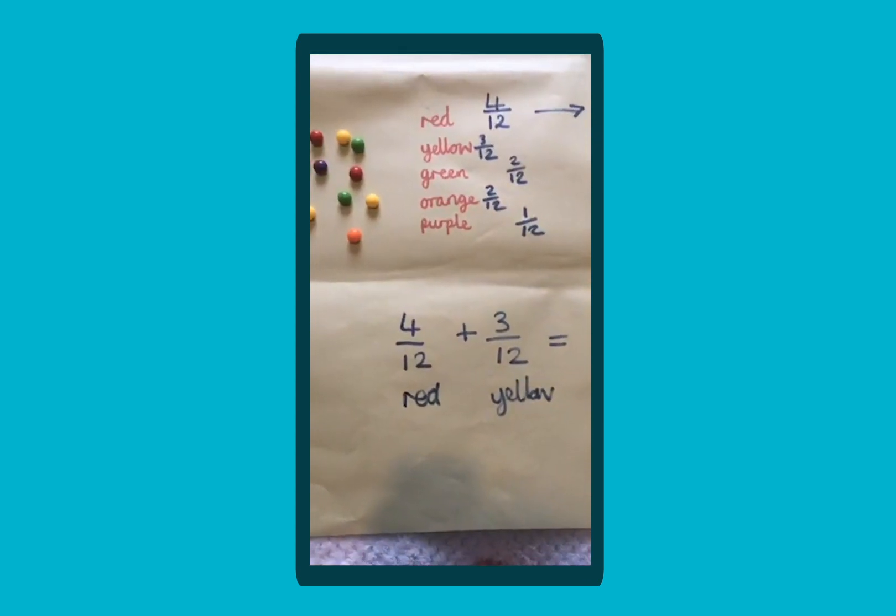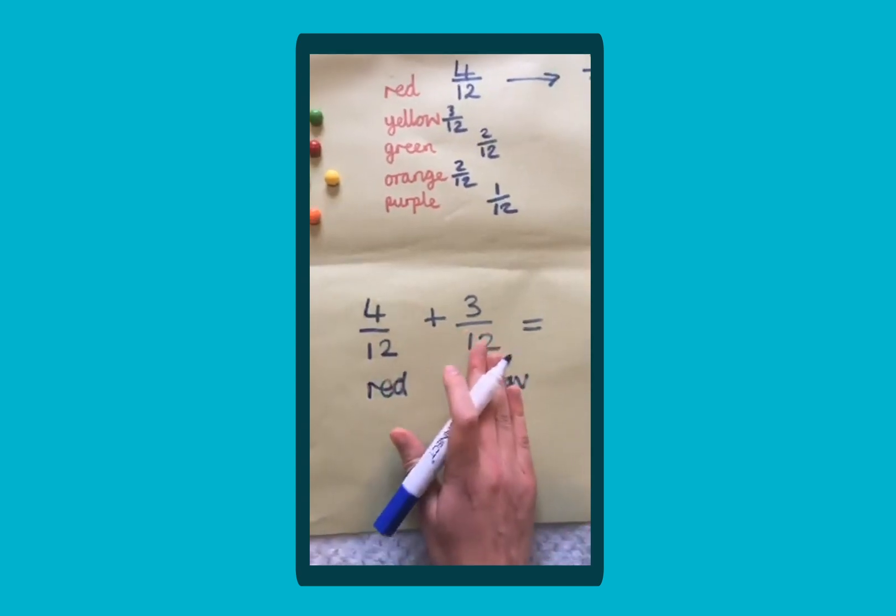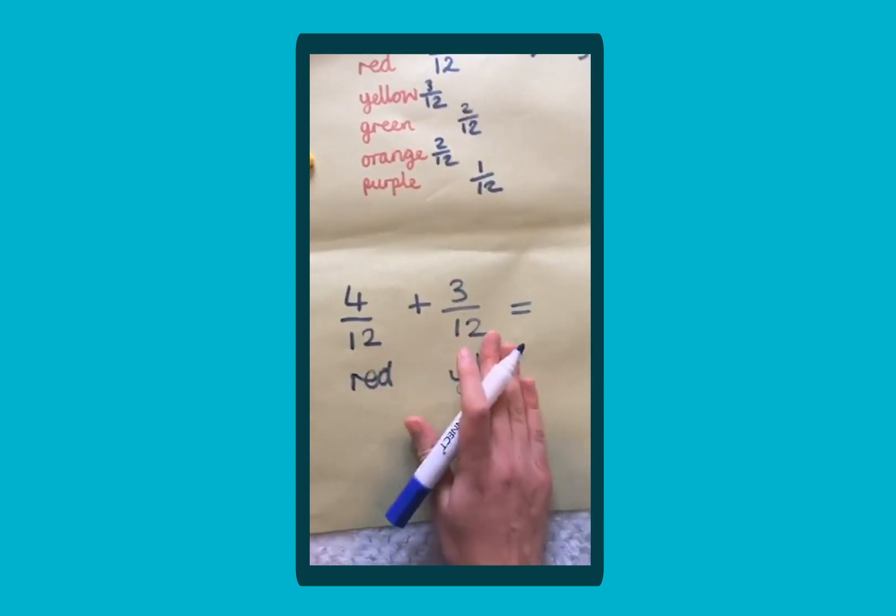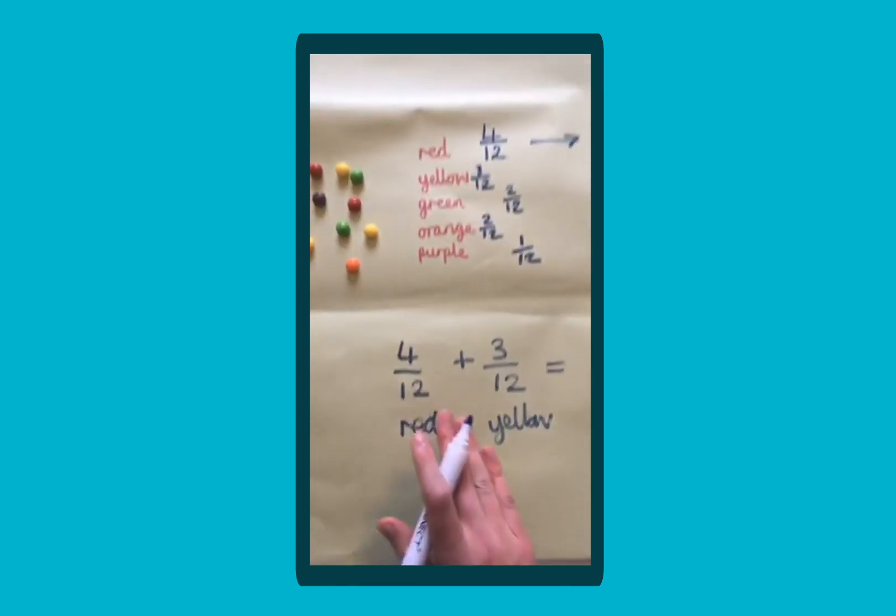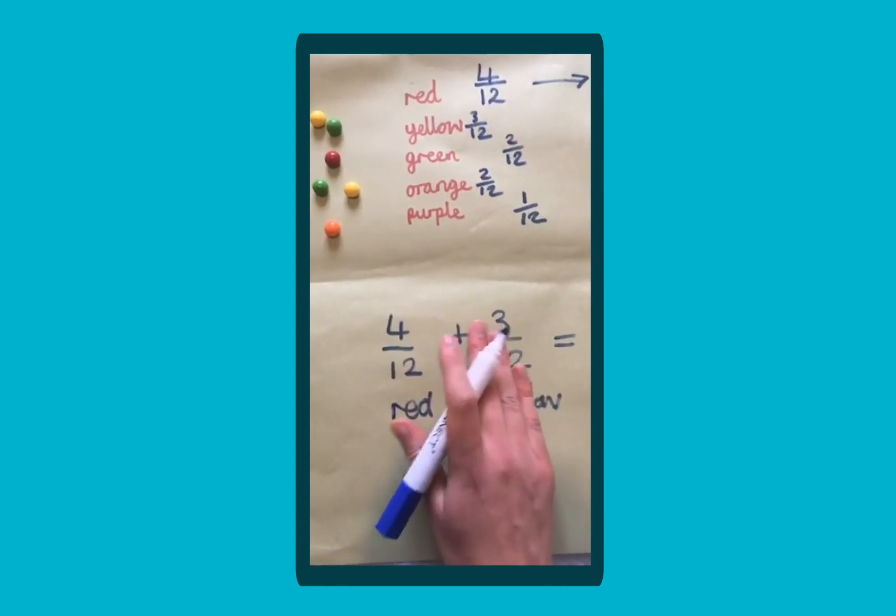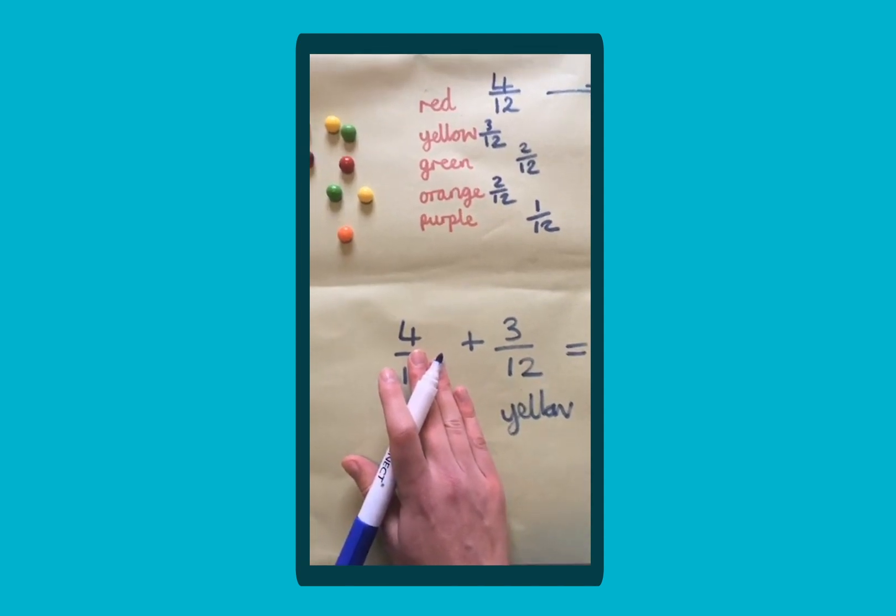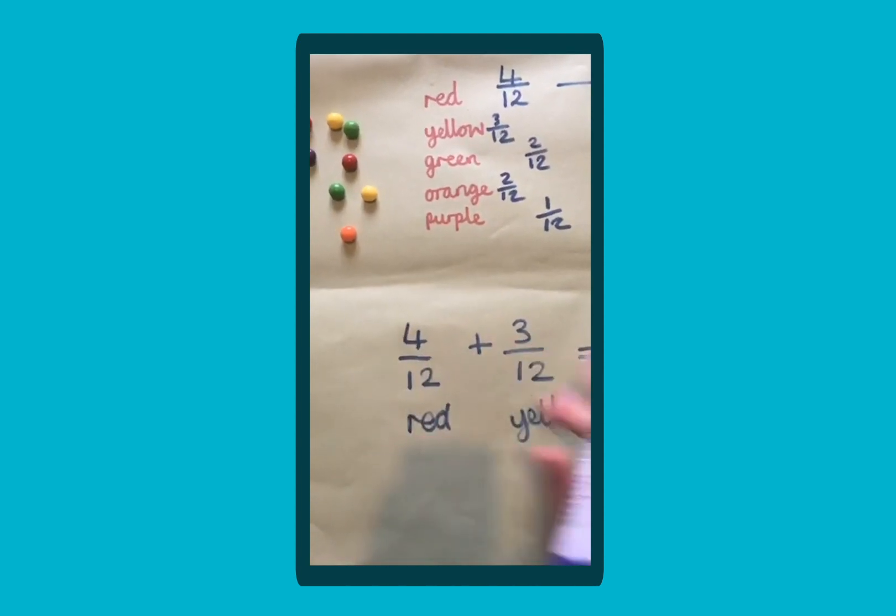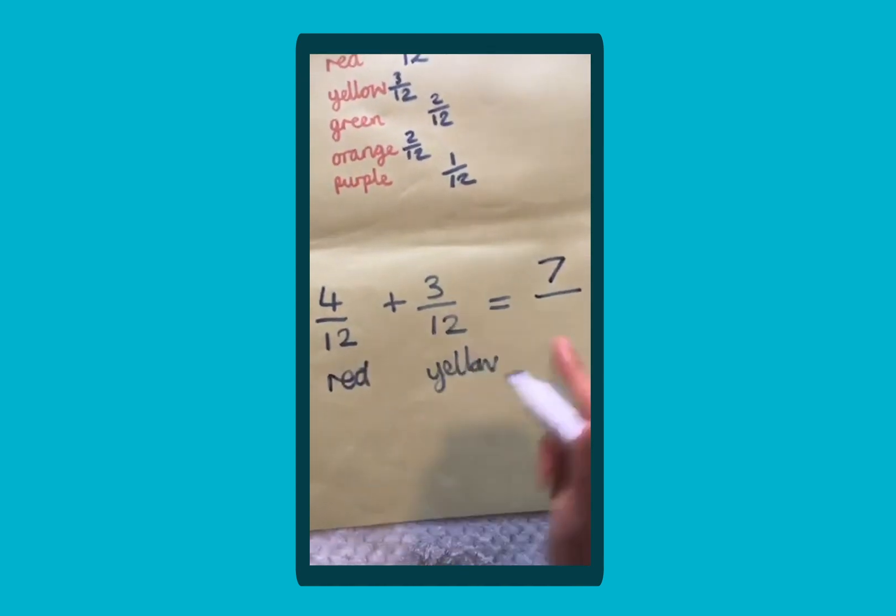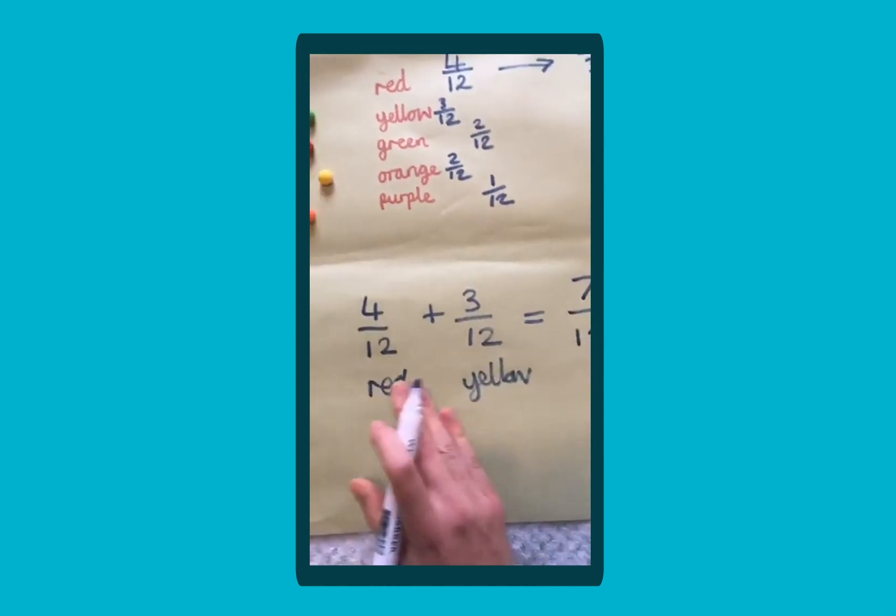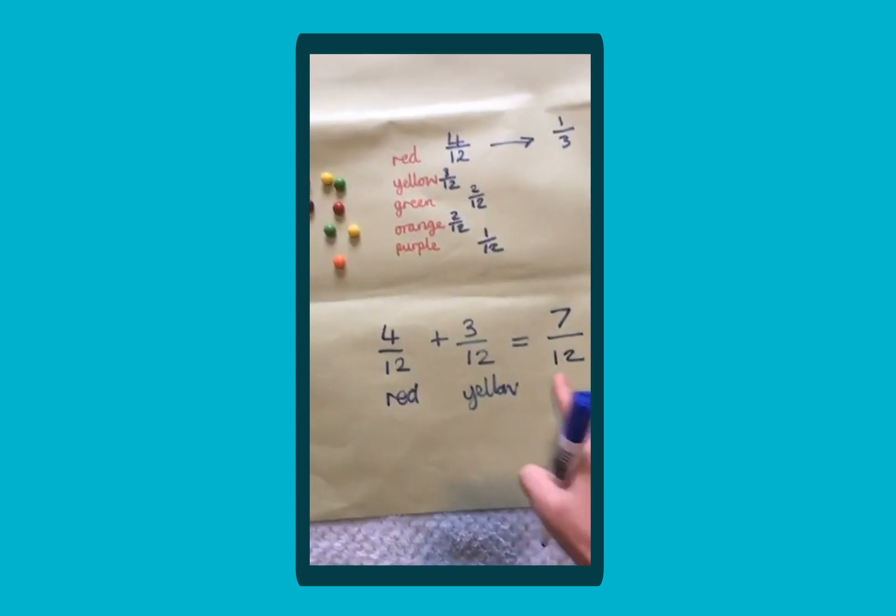When you're adding fractions, the denominator stays the same. So remember our denominator is the bottom number, that's the whole, it stays the same. It'll only be the numerator, our parts, the top number, that gets added and changes. So four and three is seven and my whole stays the same, so my red and yellow sweets altogether are seven twelfths of the set, of the whole.